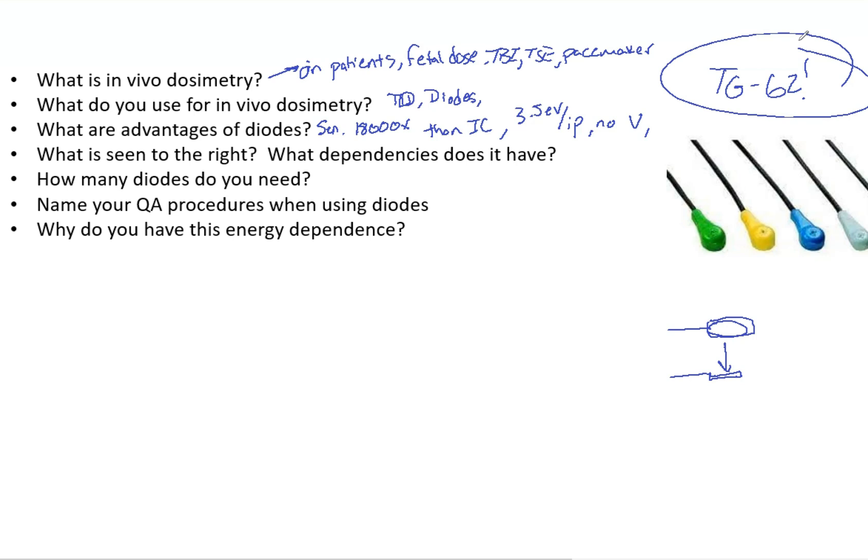So the energy dependence is a big deal with diodes, and that will determine how many we need. So because of that energy dependence, you need a low energy for photons. So that could be 6 to 10 MV. Then you need a separate diode for a high energy photon. So that's going to be 15 to 18 MV. And then you can just have one electron. And so that would give you three diodes for your clinic.